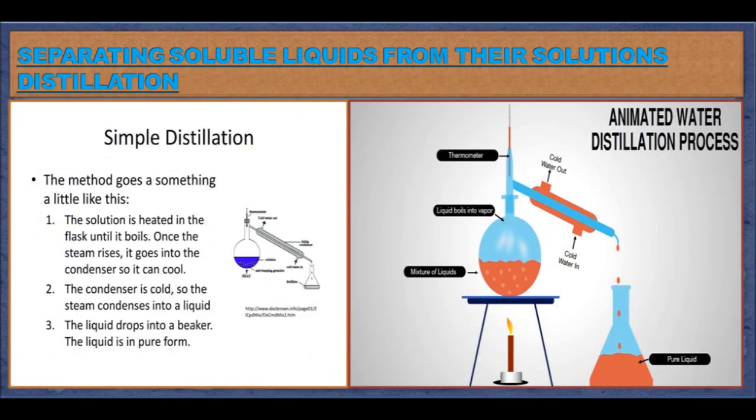Separating soluble liquids from their solutions: Distillation. Distillation is a method of obtaining a pure liquid from a solution. The solution is heated until it reaches the boiling point of the liquid, which then evaporates. The vapours are passed through a cool condenser where they condense to form the pure liquid, known as the distillate. Distilled water is also obtained by this method.